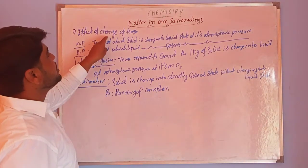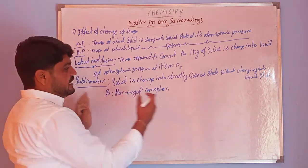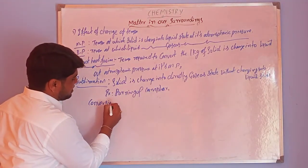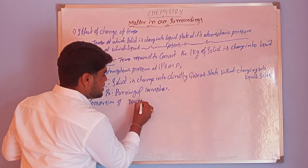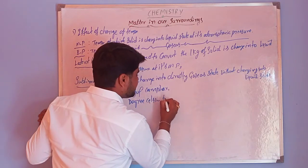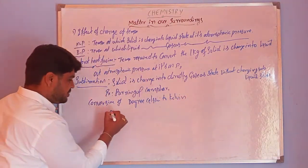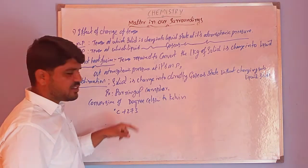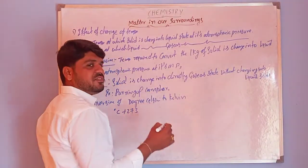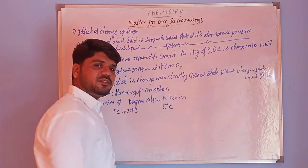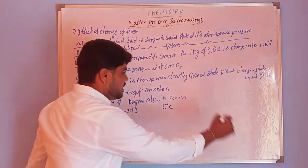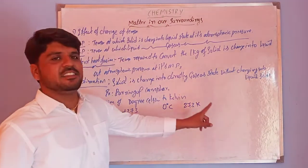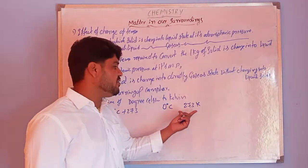One more important concept in the effect of change of temperature is the conversion of degrees Celsius to Kelvin. The formula is: Kelvin = degree Celsius plus 273. The freezing point of water is 0 degrees Celsius, and in the Kelvin scale the same temperature is indicated as 273.15 K, which we round to 273.